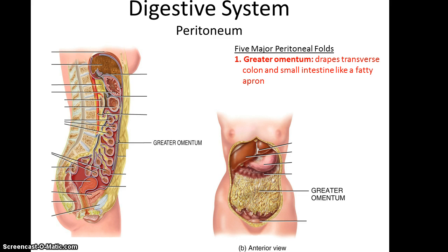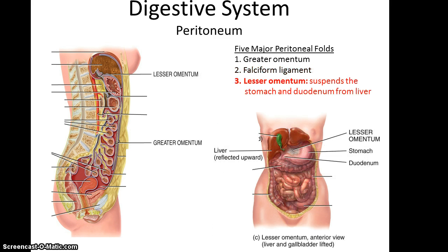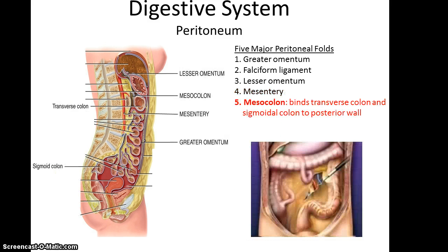The peritoneum is not a simple structure — it has five major folds. The first and easiest to find is the greater omentum, which drapes across the colon and small intestines much like a fatty apron; this is the area that increases in thickness in men who have beer bellies. There's the falciform ligament, which attaches to the liver and connects it to the anterior abdominal wall. There's the lesser omentum, which suspends the stomach and duodenum from the liver. There's the mesentery fold, which binds the jejunum and ileum of the small intestine to the posterior abdominal wall. And then the mesocolon, which has two parts, binding both the transverse colon and the sigmoidal colon to the posterior wall.